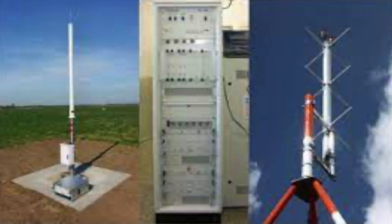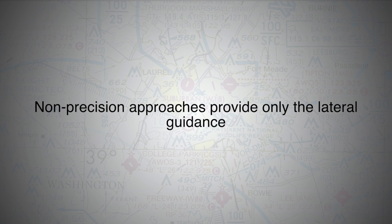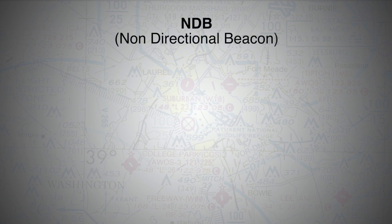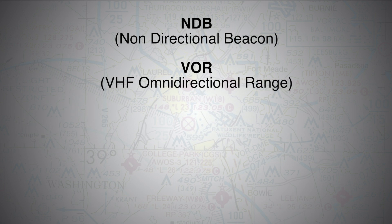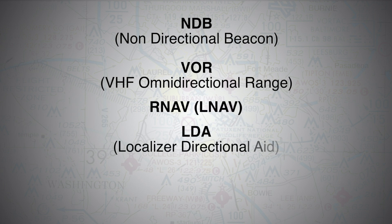Last but not least, the newest GLS or GBAS Landing System — I will make a separate video about how it works soon. On the other hand, non-precision approaches provide only lateral guidance; it is up to the pilot flying to determine the appropriate rate of descent to maintain the proper vertical profile. Examples include NDB, VOR, RNAV LNAV-only approach, LDA localizer-only, and so on.